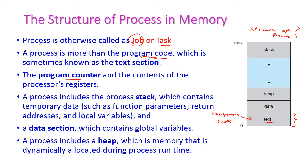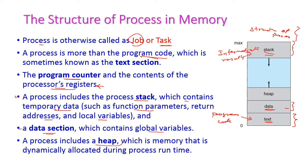Next we have the program counter, which is the process register that stores the address of the next instruction to be executed. Then we have the stack, which is used to store temporary data — that is, intermediate results such as function parameters, return addresses, and local variables. The data section contains global variables. The process also includes a heap region, where dynamically allocated memory required at process runtime is stored.